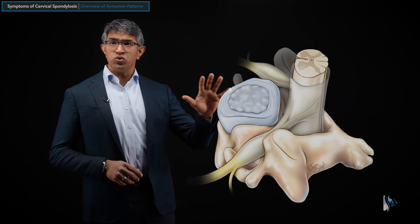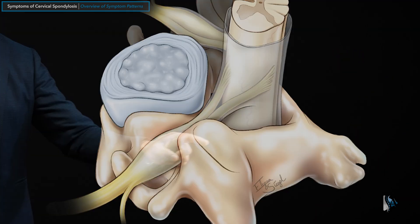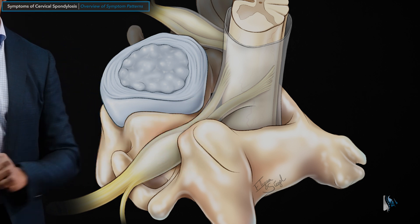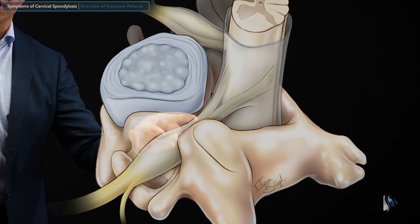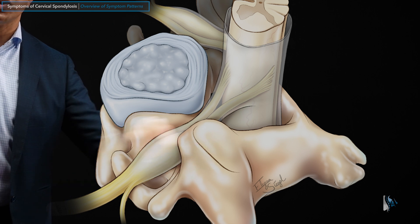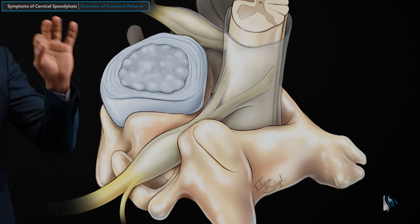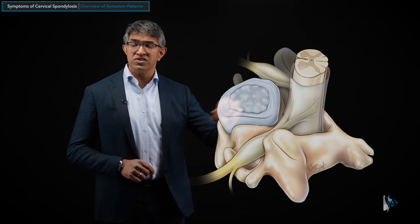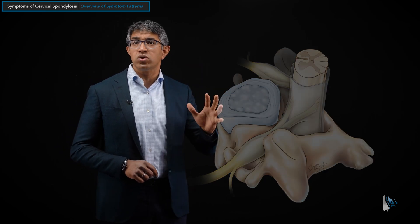The relationship between these structures: the spinal column surrounds the spinal cord and the spinal nerves. Arthritic changes here — whether involving the disc, bone spurs in the front, joints in the back, or ligament thickening in the back — can cause pressure on some of these structures, and that's really what gives rise to two of the very important categories of symptoms that we see.